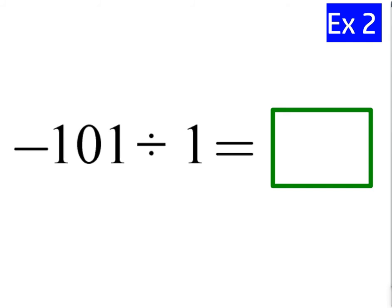Negative 101 divided by 1, we used a little bit different symbol this time, but that means divide. Negative 101 divided by 1 is going to give you what number? The answer is the same number, negative 101.